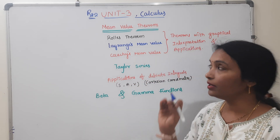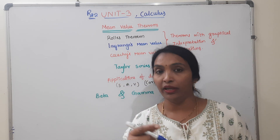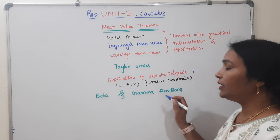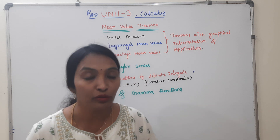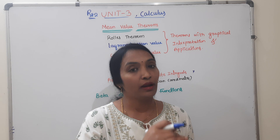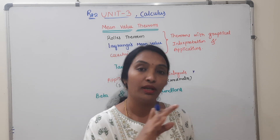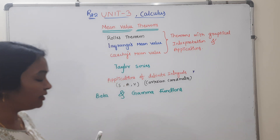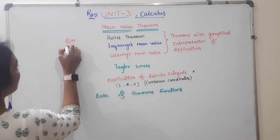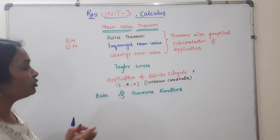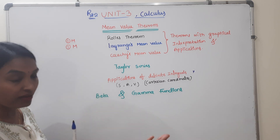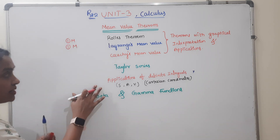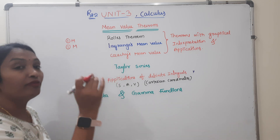I already covered the other method of R22. Beta and gamma are already there. You can follow the regular method with R22 and also the previous R18 unit 4 method. For 1-mark questions: define beta, define gamma, and applications of derivatives — Cartesian coordinates. Define Rolle's theorem, Lagrange's theorem, and related statements.